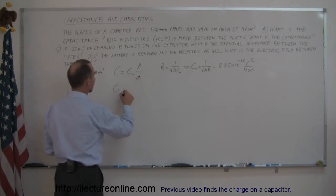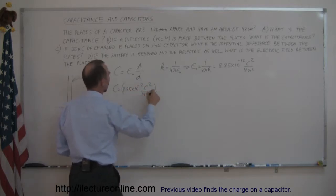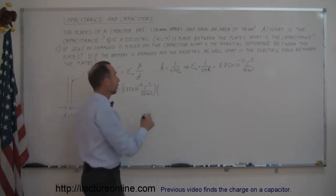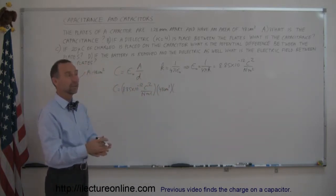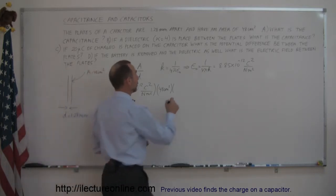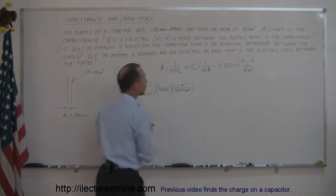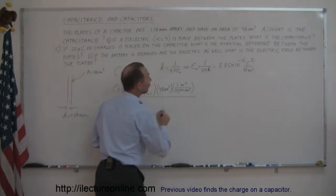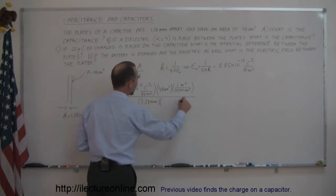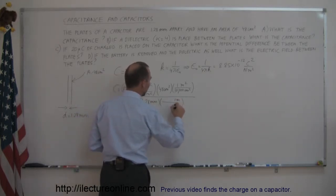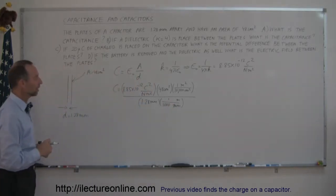The capacitance equals our constant 8.85 times 10 to the minus 12, multiplied by the area. The area is 48 centimeters squared, and we convert that to meters squared — there are 10,000 square centimeters in a square meter, so we multiply by 1 square meter divided by 10,000 square centimeters. The distance is 1.28 millimeters, converted to meters using 1 meter equals 1,000 millimeters.